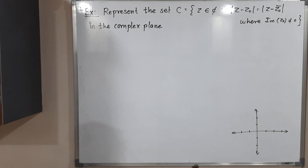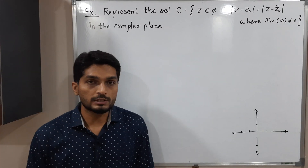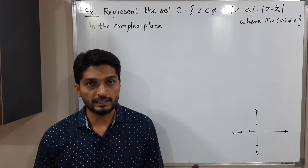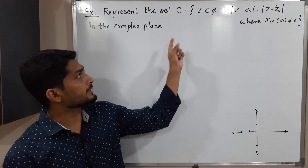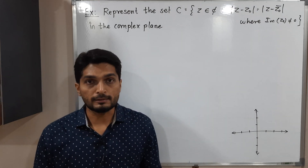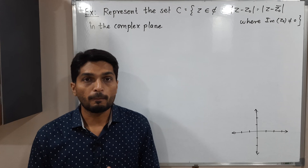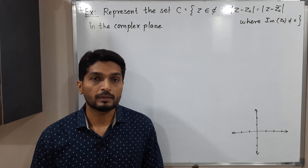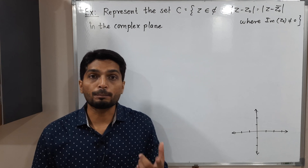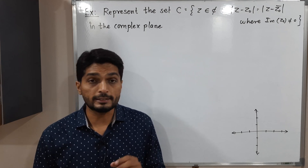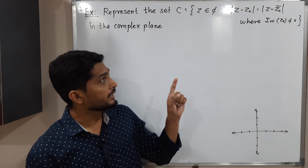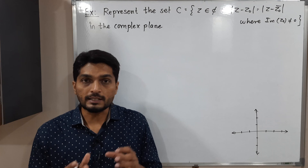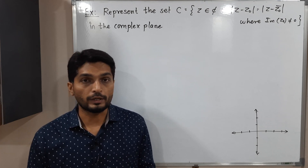In this video we are going to discuss this set C, which is a subset of the set of complex numbers. C is a collection of all complex numbers Z which satisfy the condition |Z - Z₀| = |Z - Z₀̄|, where Z₀̄ is the complex conjugate of Z₀, and Z₀ is any fixed complex number such that the imaginary part of Z₀ is nonzero.